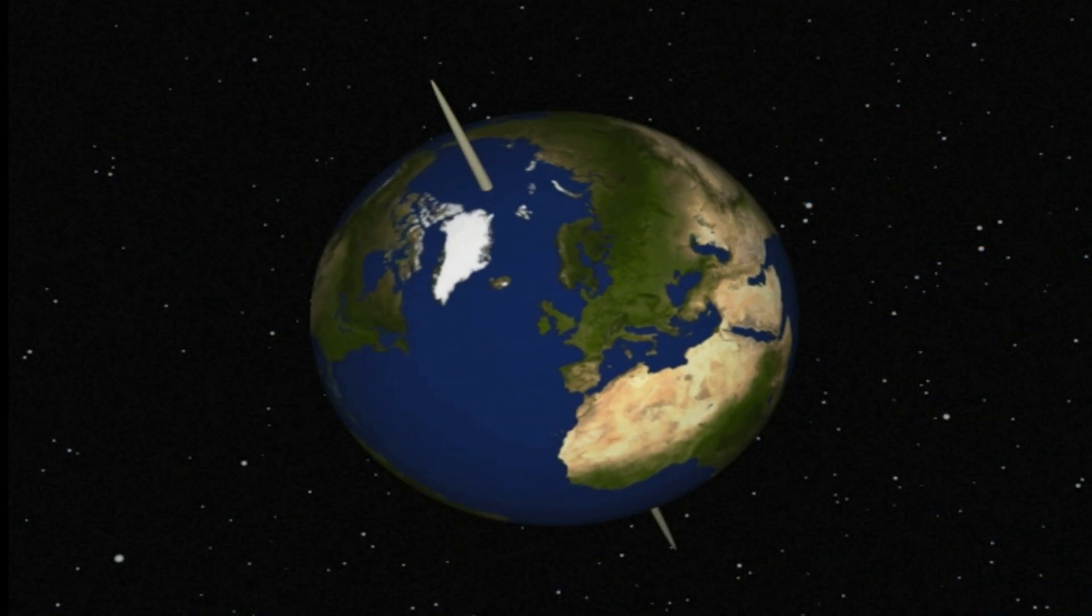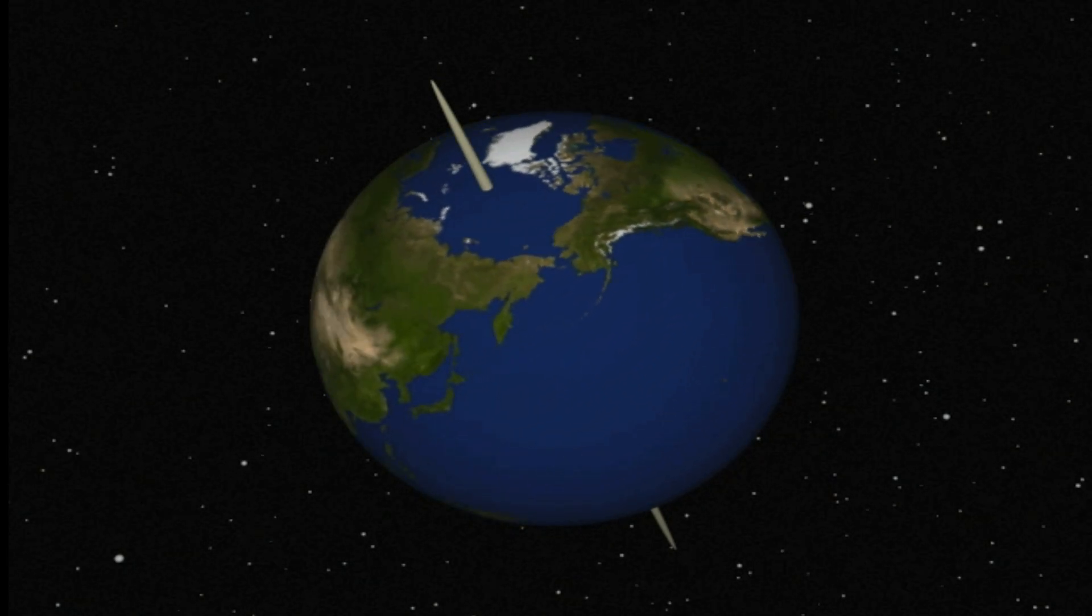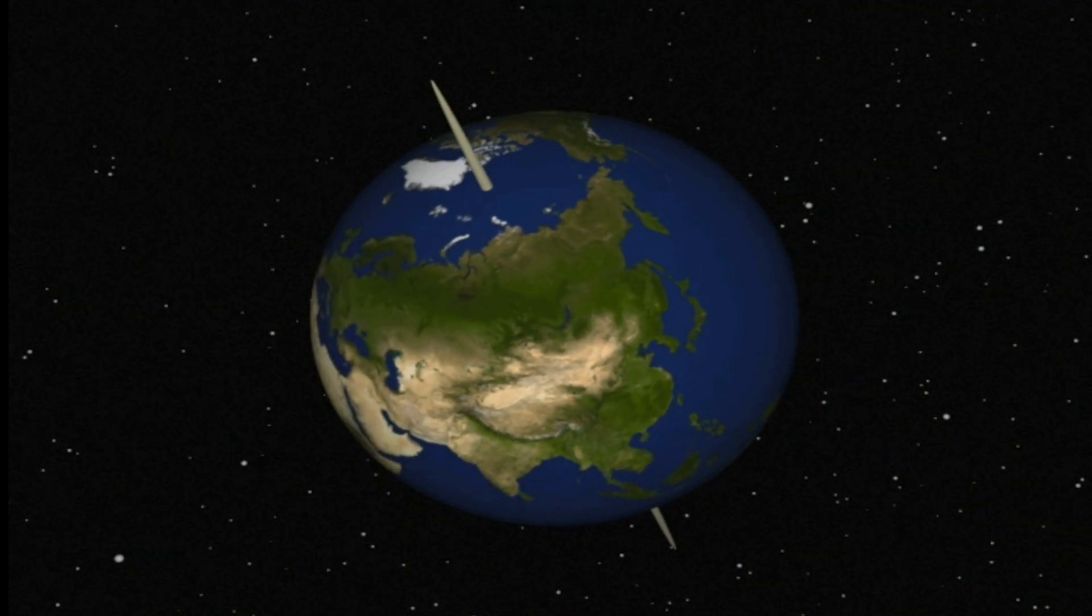The North Star is positioned exactly above the North Pole. A person in this place will see the North Star at an angle of 90 degrees, more precisely above the head.